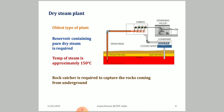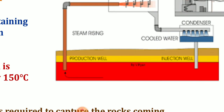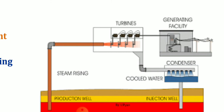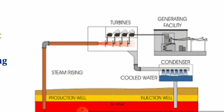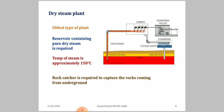First, the dry steam plant. The diagram shows the injection well through which cooled water is sent. The red portion of the Earth layer indicates higher temperature. The water is heated up, pumped up as hot water, and goes to the turbines, which rotate because the water is converted to steam. The steam is then cooled and condensed back to cooling water, and along with the turbine there are generation facilities available.